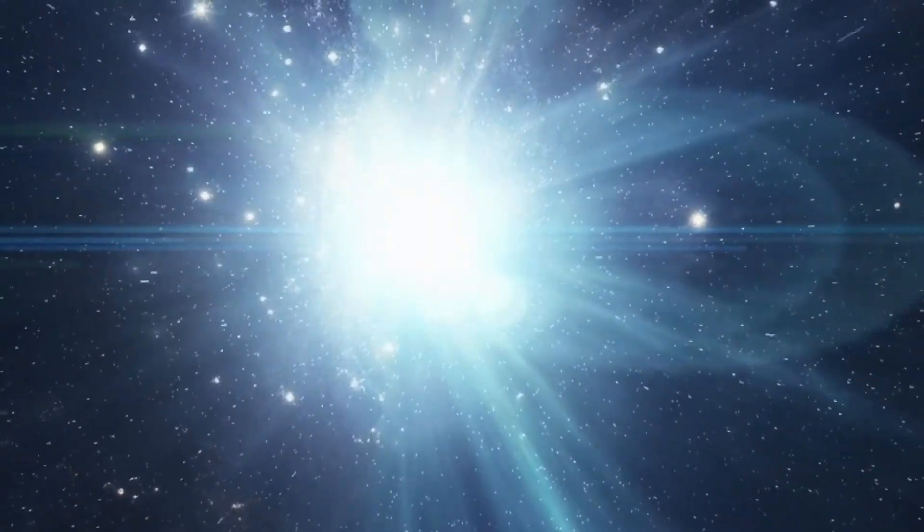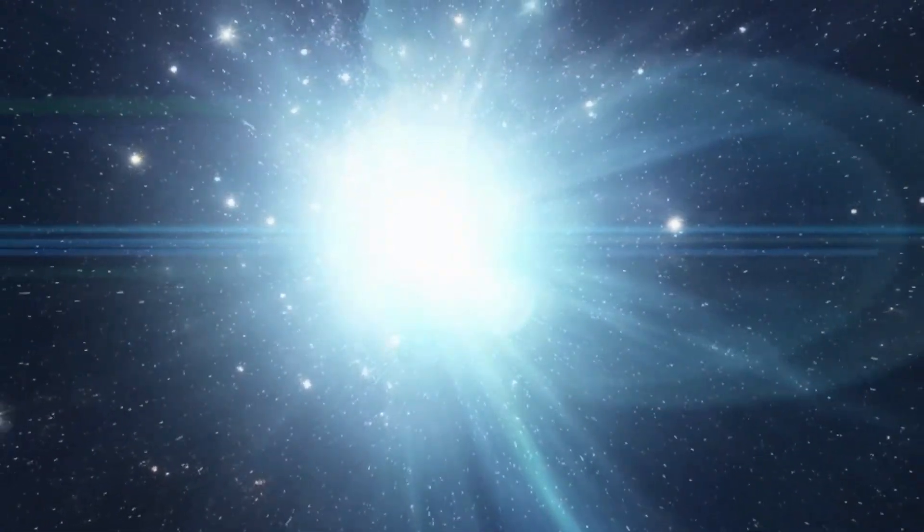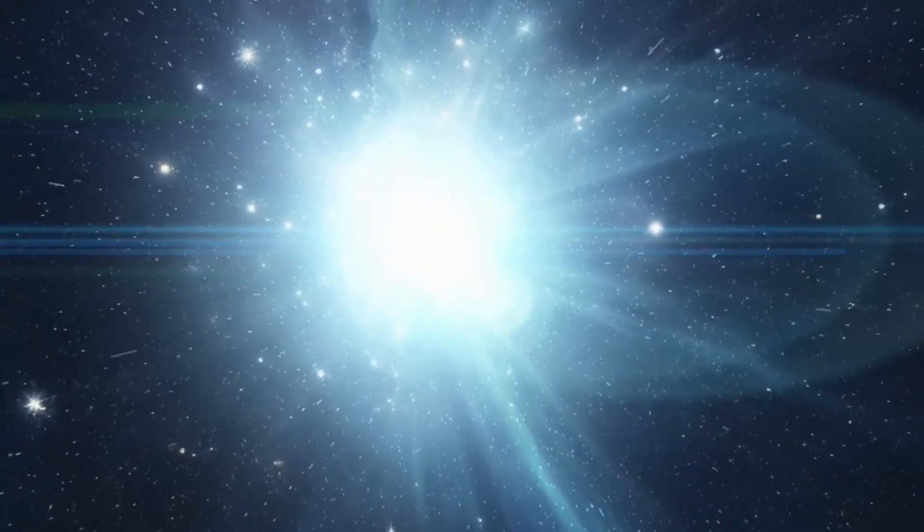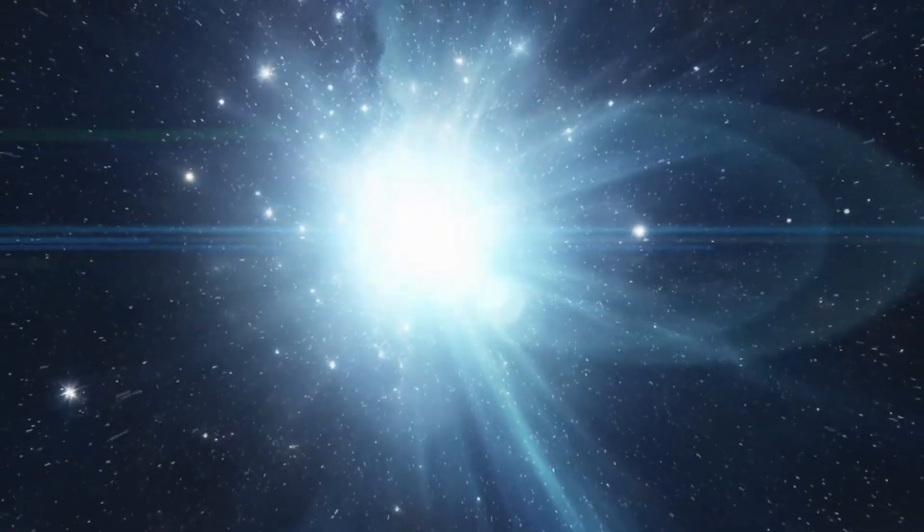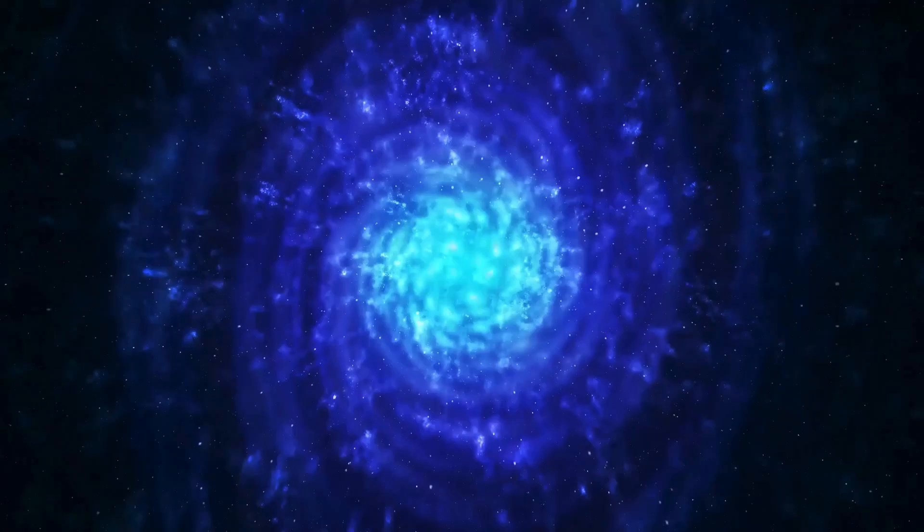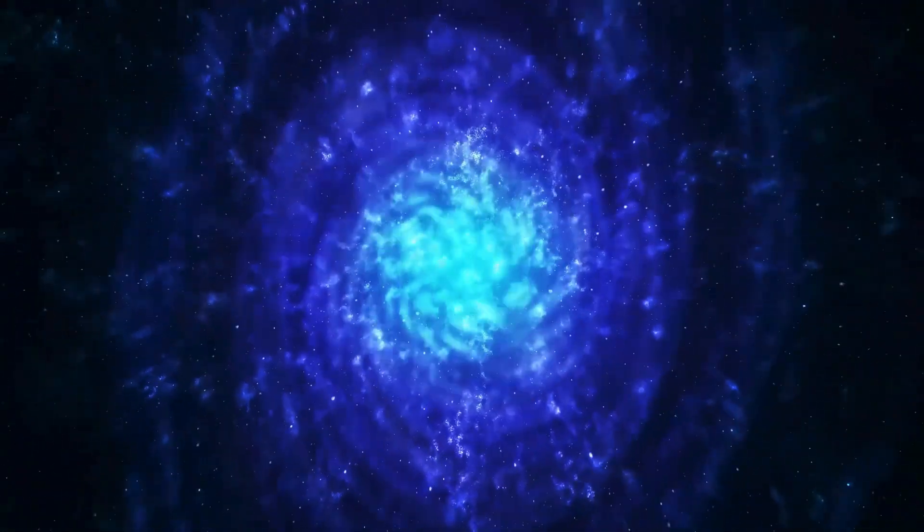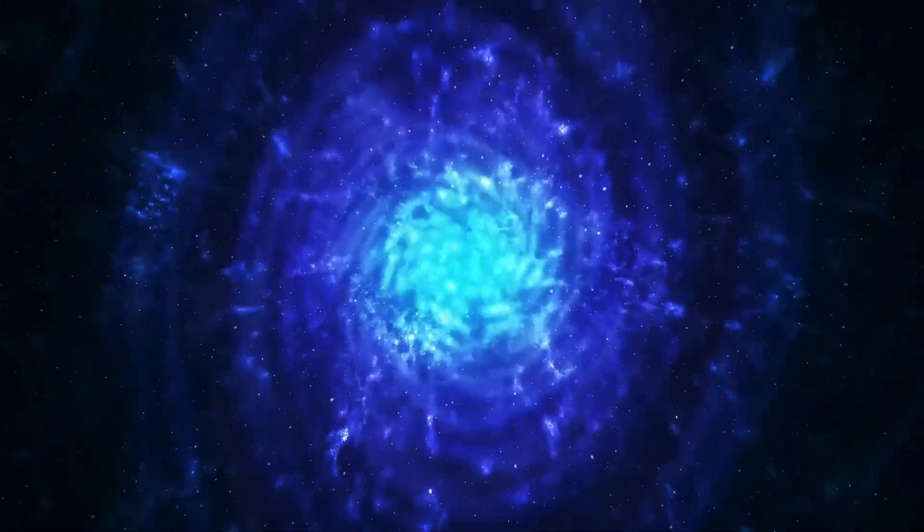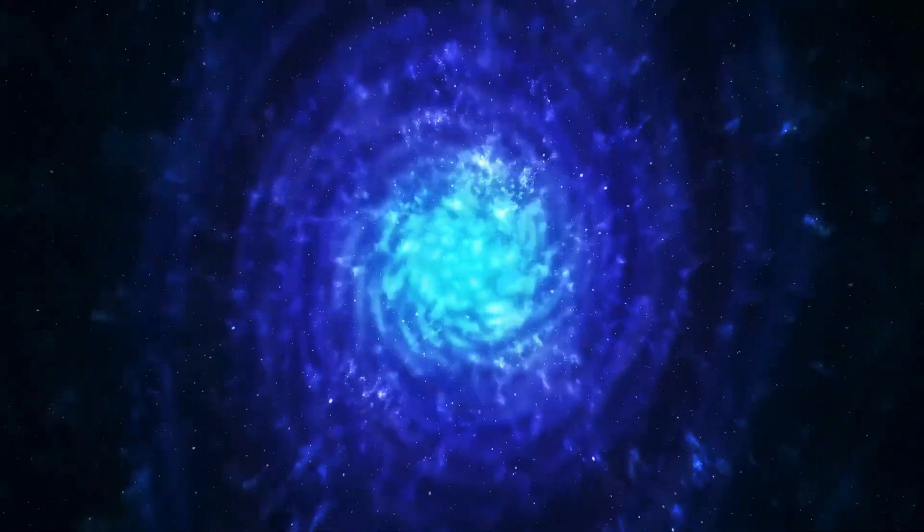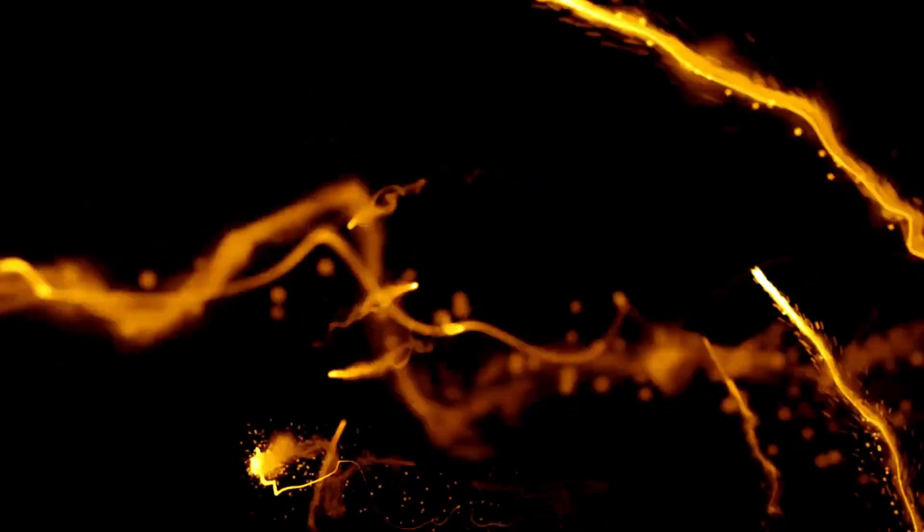The star associated with this exoplanet, Proxima Centauri, is classified as a red dwarf, characterized by its relatively cool temperature of 2,872 degrees Celsius. It is fundamentally less massive than our Sun and emits approximately 0.001 times less light.